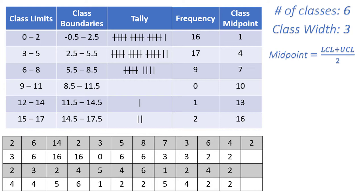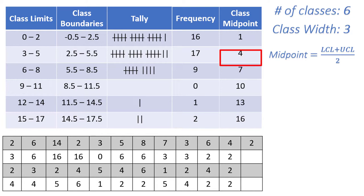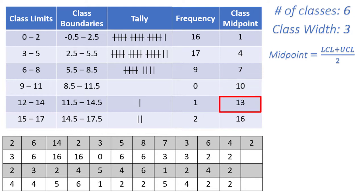You might notice that the class midpoints increment by the class width. We have 1, and adding 3 gives us 4, adding 3 again gives us 7, then 10, 13, and 16. We have finally finished our frequency table, and now we are ready to create the histogram.